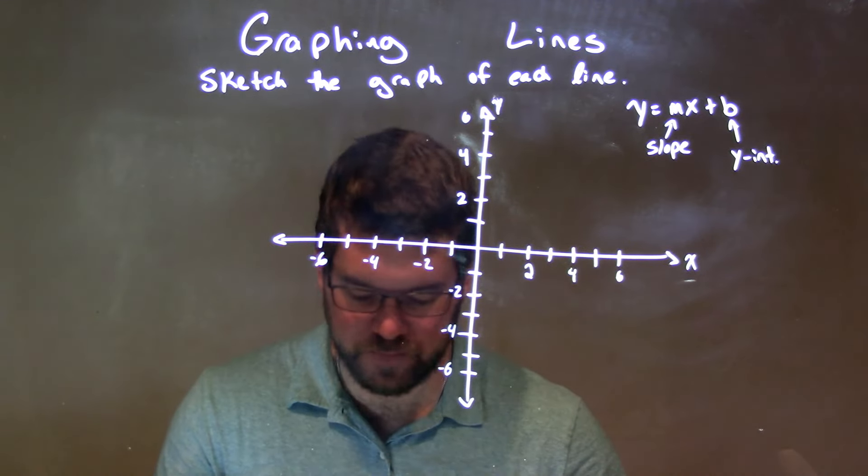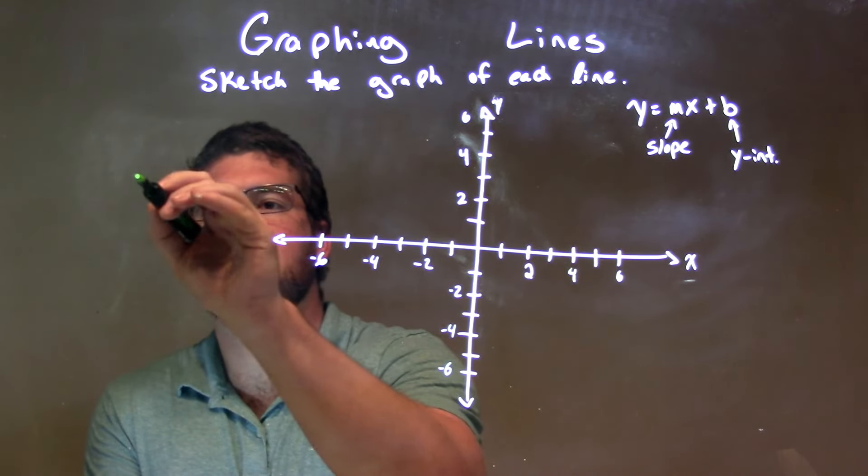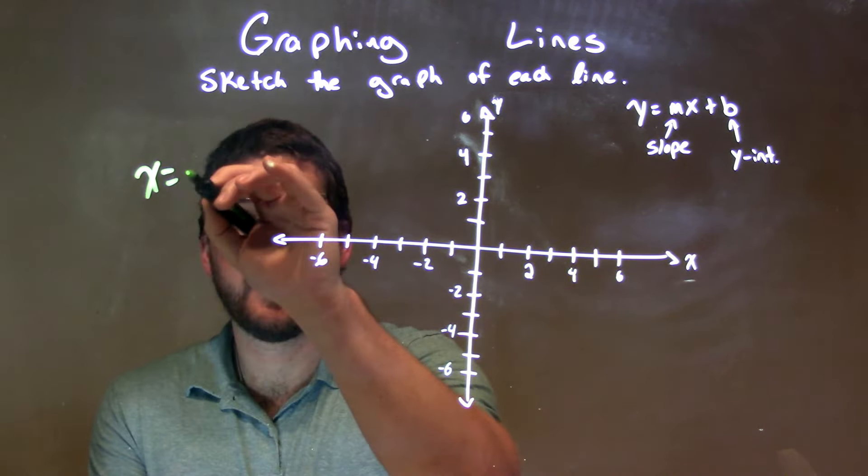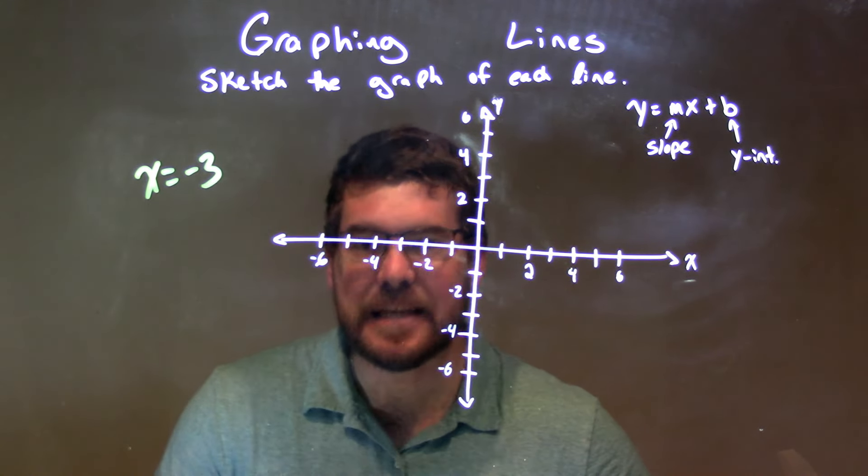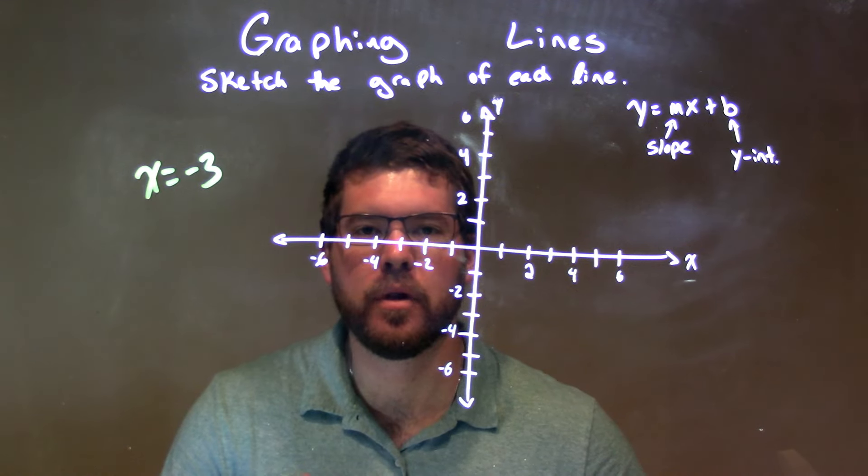I'm going to sketch the graph of which line. If I was given this line, x equals negative 3. Well, when we see x equals a number, and that's it, that is a vertical line.